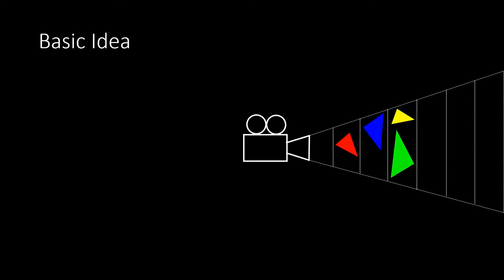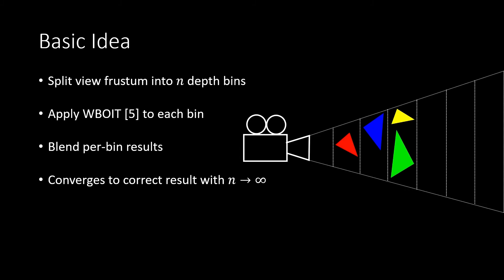We present a simple yet efficient algorithm for order-independent transparency. The basic idea is that we split the view frustum into a number of n depth bins, then we apply the weighted blended operator to each of these bins separately, and then blend the per-bin results together using the classical alpha blending method. If we let the number of bins approach infinity, then there's only a single fragment left in the limit in each bin and therefore we get the correct result.